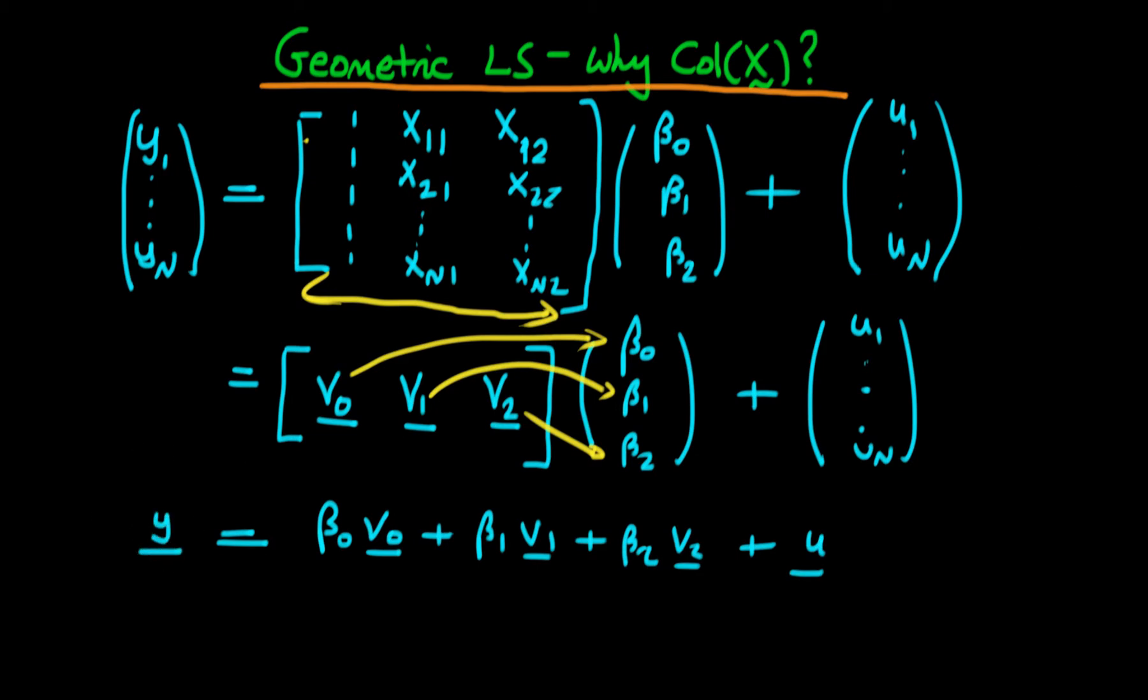So when you write it out in this form, it becomes quite apparent what the role of the parameters is. Essentially what the parameters do, beta 0 through beta 2, is they tell us how much of each particular vector do we need to get as close to y as possible.